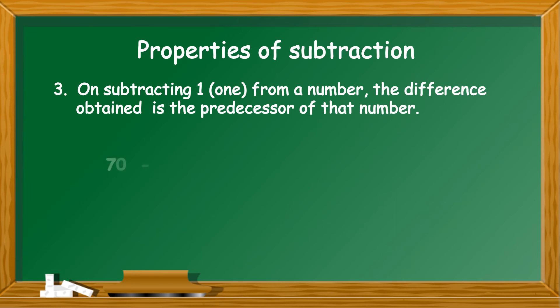70 minus 1 is the predecessor of the number 70 which is 69 or 330 minus 1 is the predecessor of 330 which is 329.